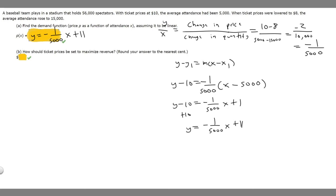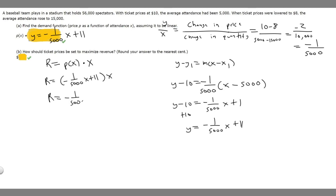Now let's find part B: how should ticket prices be set to maximize revenue? First we need the revenue function. Revenue equals the demand function p(x) times x. So R equals negative 1 over 5,000 x plus 11, times x. That gives us R equals negative 1 over 5,000 x squared plus 11x.